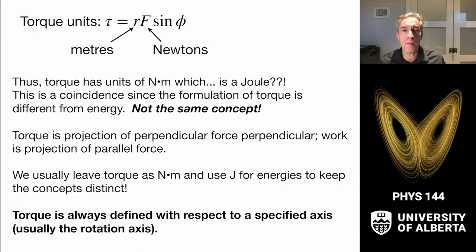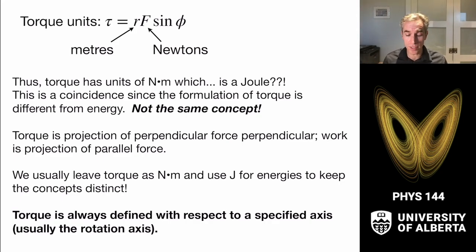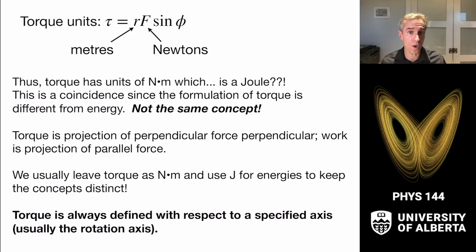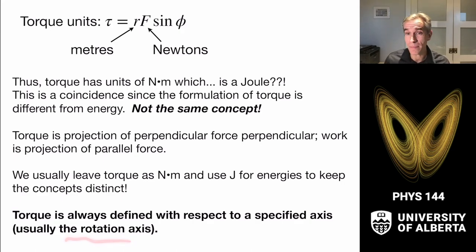Much like potential energies and kinetic energies, torques depend on your choice of origin. The torque always has to refer to a specified axis — usually we pick the axis around which the object is rotating. Sometimes we'll have some more freedom, which we can use to our advantage.